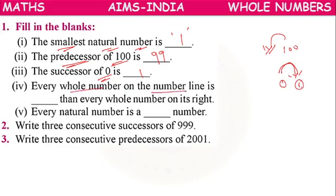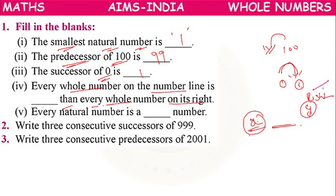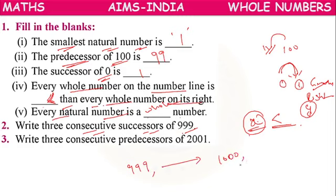Every whole number on the number line is less than every whole number on its right. Every natural number is a whole number. Write 3 successors of 999: the answers are 1000, 1001, 1002.